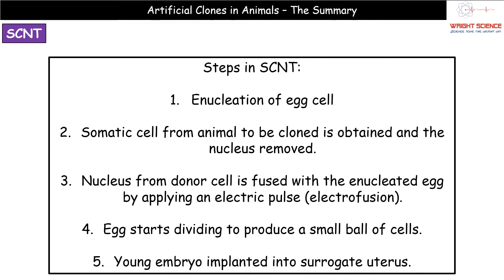Let's work through the steps in SCNT. The first thing is the enucleation of an egg cell — enucleation means the removal of the nucleus. So we remove the nucleus from an egg cell. Then we take a somatic cell from the animal we are going to clone, and we also remove the nucleus from that somatic cell. We then fuse the nucleus from our donor cell with the enucleated egg.